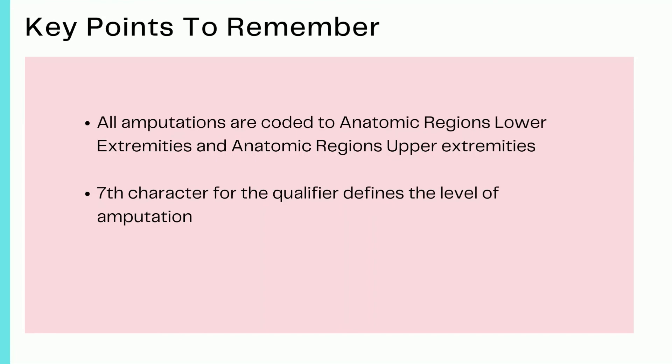Key points to remember: all amputations are always coded to anatomic regions lower extremities or anatomic regions upper extremities, using body system values X and Y. The seventh character qualifier defines the level of amputation performed — whether it is high amputation, mid amputation, or low amputation. For fingers, toes, hands, and feet, the qualifier specifies the ray where the amputation is performed.